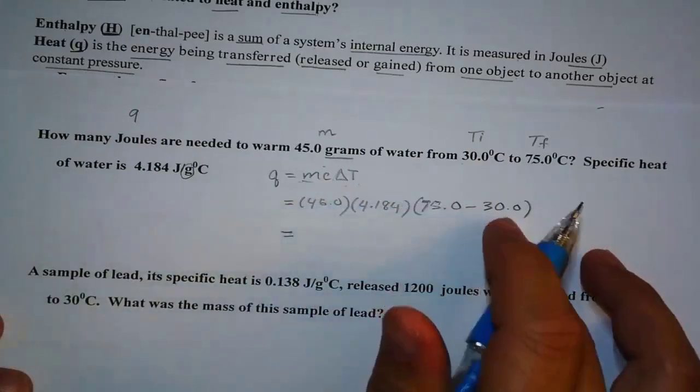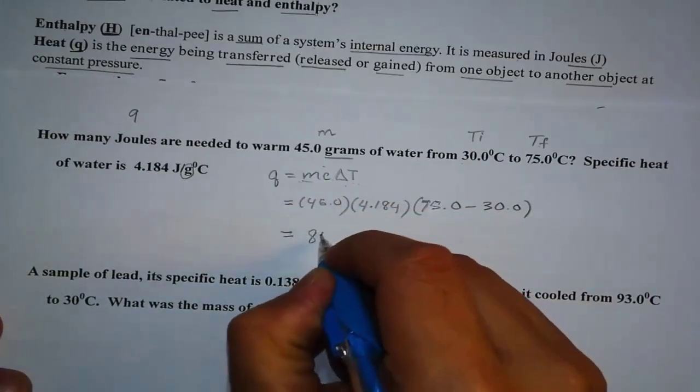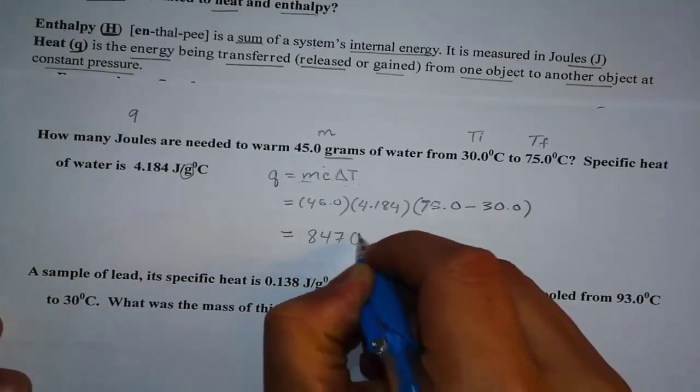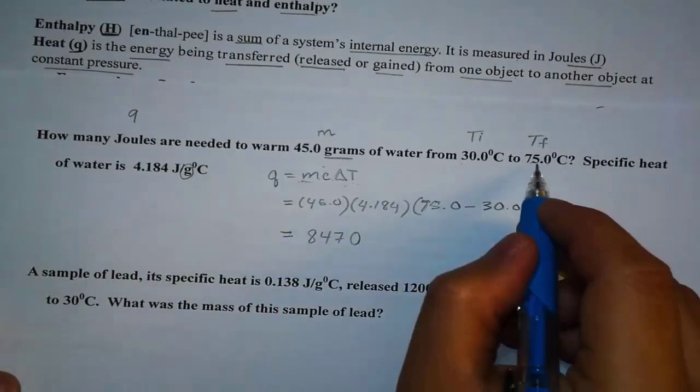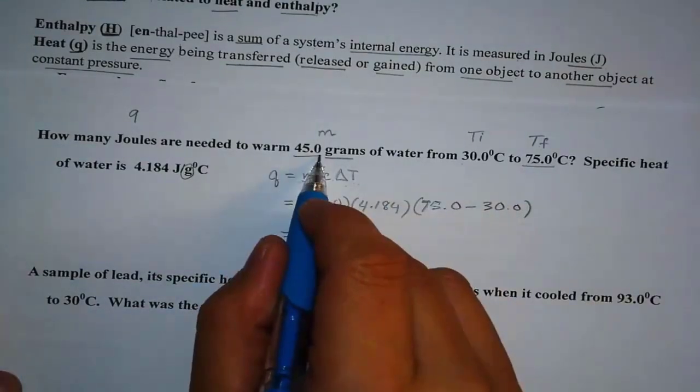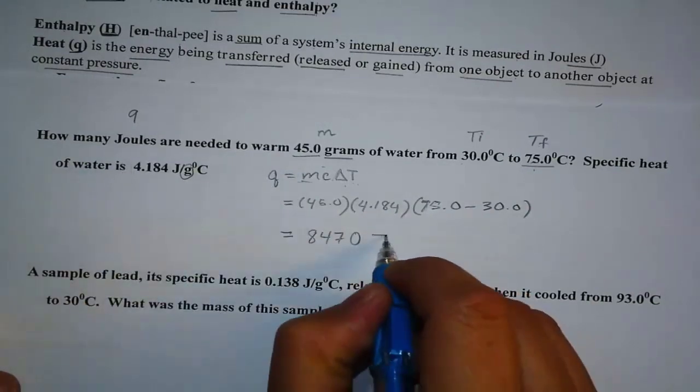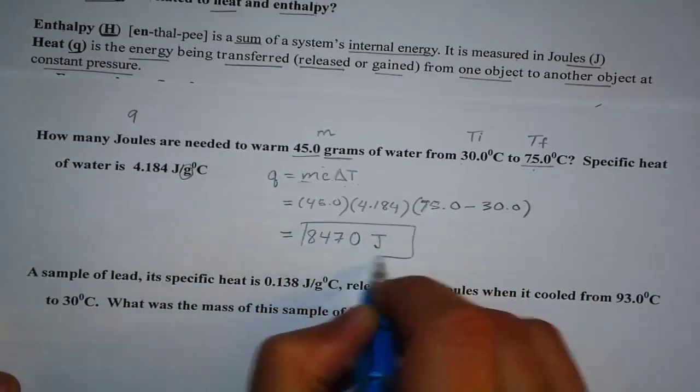So, if you plug this into your calculator, what you have is 8,470. And we want to keep three significant figures. So what is the unit for Q again? Of course, it is Joule. And there you go. That is your answer.